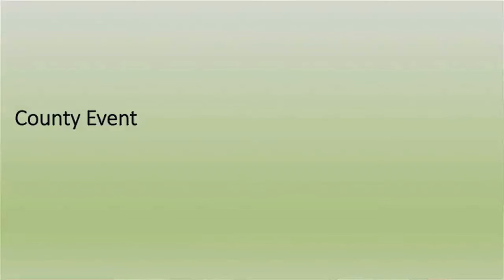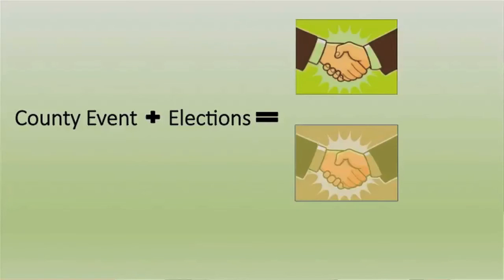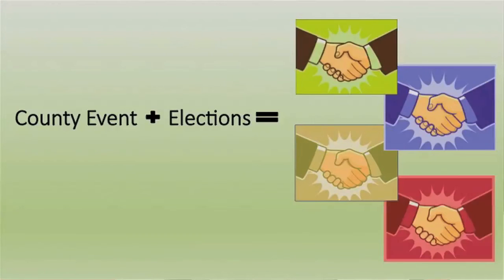Elections can be held in conjunction with an event such as a crop improvement meeting, or as a separate meeting. Multiple council elections can be held during the same event. Planning and officiating these elections provide the county ANR agent a great opportunity to meet and form a working relationship with the producers in the county. Providing a well-run election and event can help agents become a recognized and knowledgeable resource to area producers.